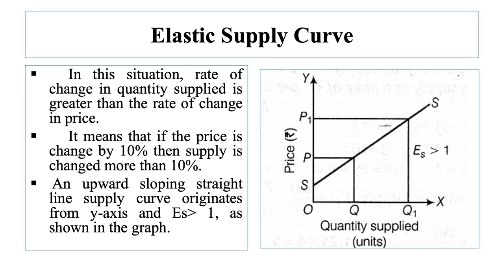Next is when elasticity of supply is greater than 1. This is also known as elastic supply. In this situation, the rate of change in quantity supplied is greater than the rate of change in price — meaning if the price changes by 10%, the supply changes by more than 10%. An upward sloping straight line supply curve originates from the Y-axis, and the elasticity of supply is greater than 1, as shown in the graph.